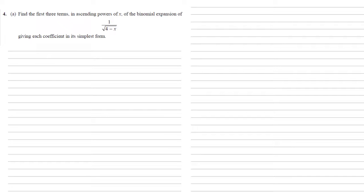So the first thing we need to do here is change our fraction into brackets to a power. So we've got 4 minus x, and this is to the power of minus a half. Minus because we're dealing with 1 over, and a half because it's a square root.